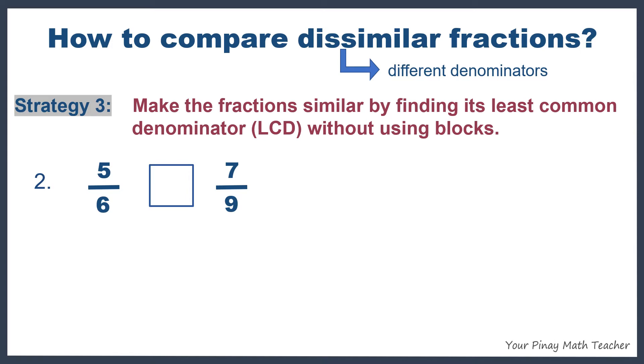Because 5 sixths and 7 ninths have different denominators, then they are dissimilar fractions. So we have to make them similar. So first find the LCD by listing the first few multiples of 6 and the first few multiples of 9.